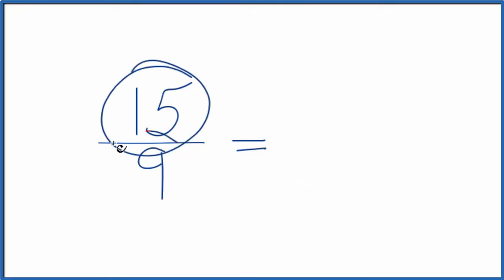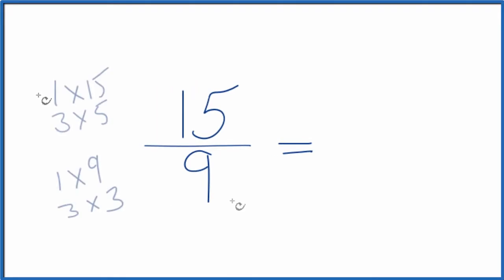To do that, we need to find a common factor, something that goes into 15 and 9 evenly. So if I list the factors for 15 and 9, they look like this, and the greatest common factor here is 3.